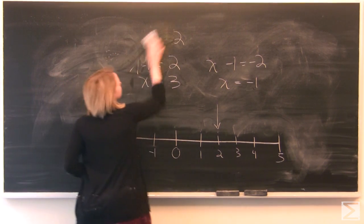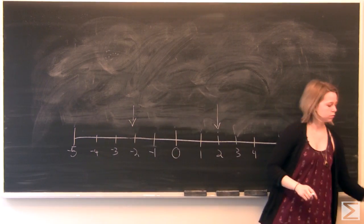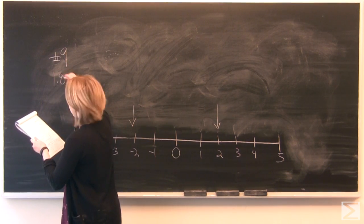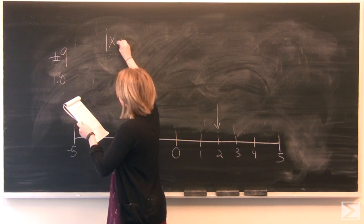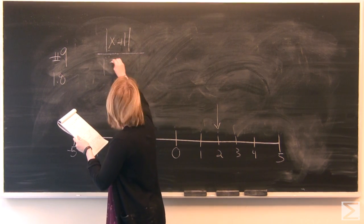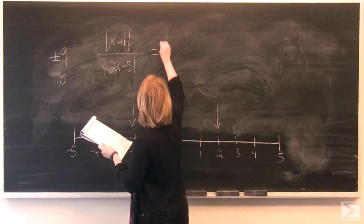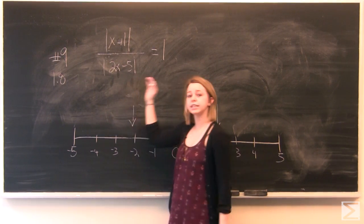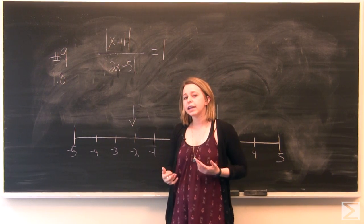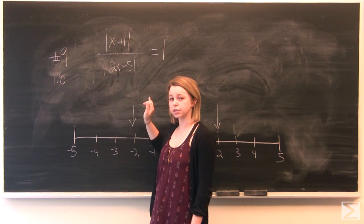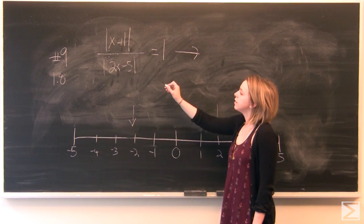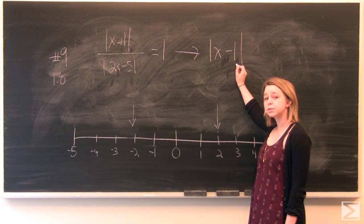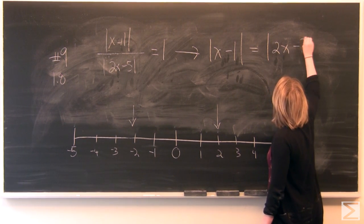Next we're going to look at a problem that is a little more intimidating at the start, but it's not that bad. This is problem number 9 from section 1.8 in our precalculus textbook. The equation states the absolute value of x plus 1, divided by the absolute value of 2x minus 5, is equal to 1. We can multiply both sides by the absolute value of 2x minus 5, giving us the simplified equation: the absolute value of x minus 1 equals the absolute value of 2x minus 5.